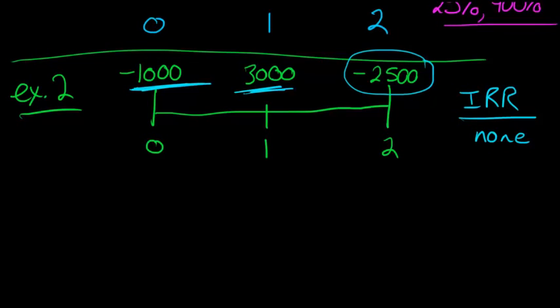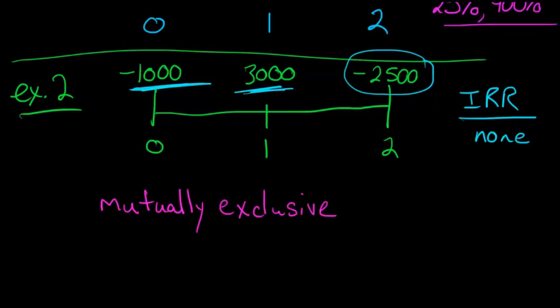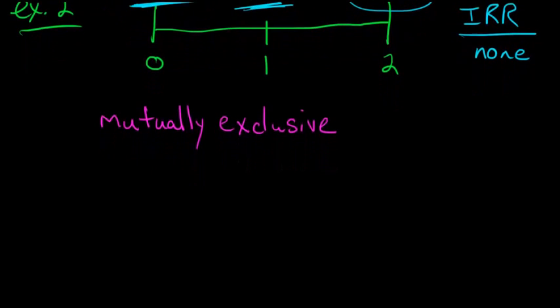But let's think about something else. Let's think about something called mutually exclusive projects. What do we mean when we're talking about mutually exclusive? Well, we mean that you have two different projects and you can only choose one. You can't say, well, these both look like good projects, let's do them both.